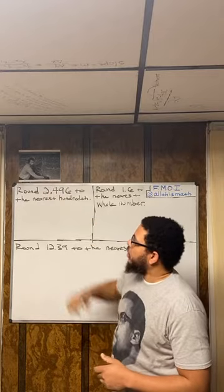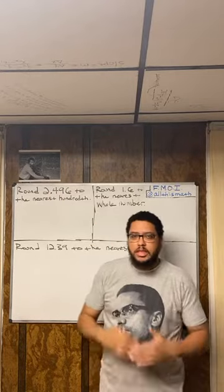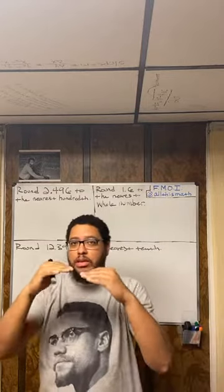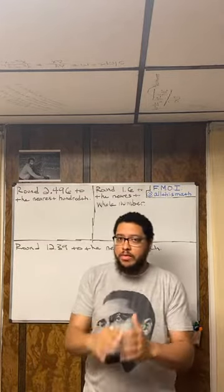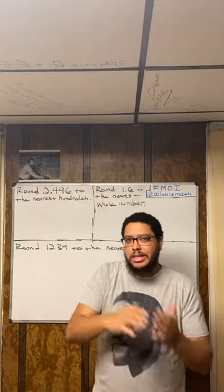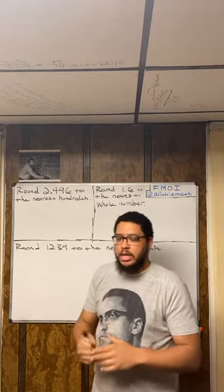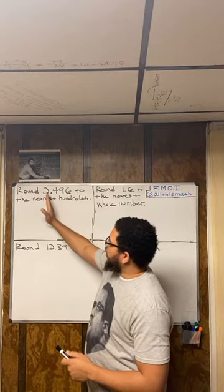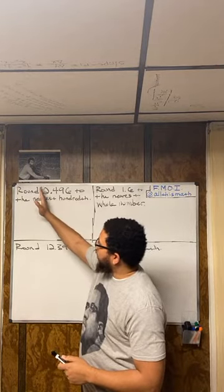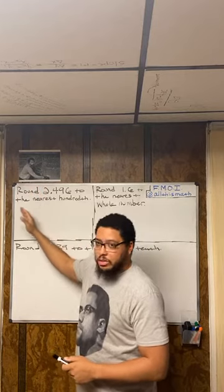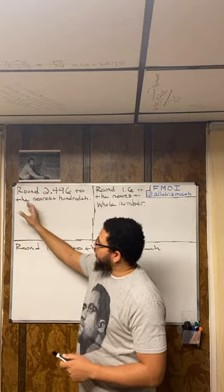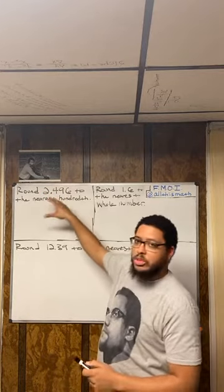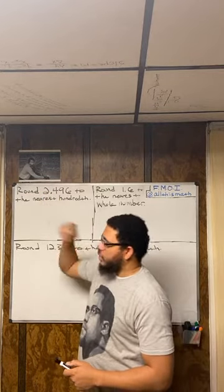The first example. Whenever you're rounding, there's a step-by-step process. You should instill in your children to follow this process. First, they need to understand place value — the ones place, tens place, hundreds place, thousands place, ten thousands place, and so on to the left of the decimal.